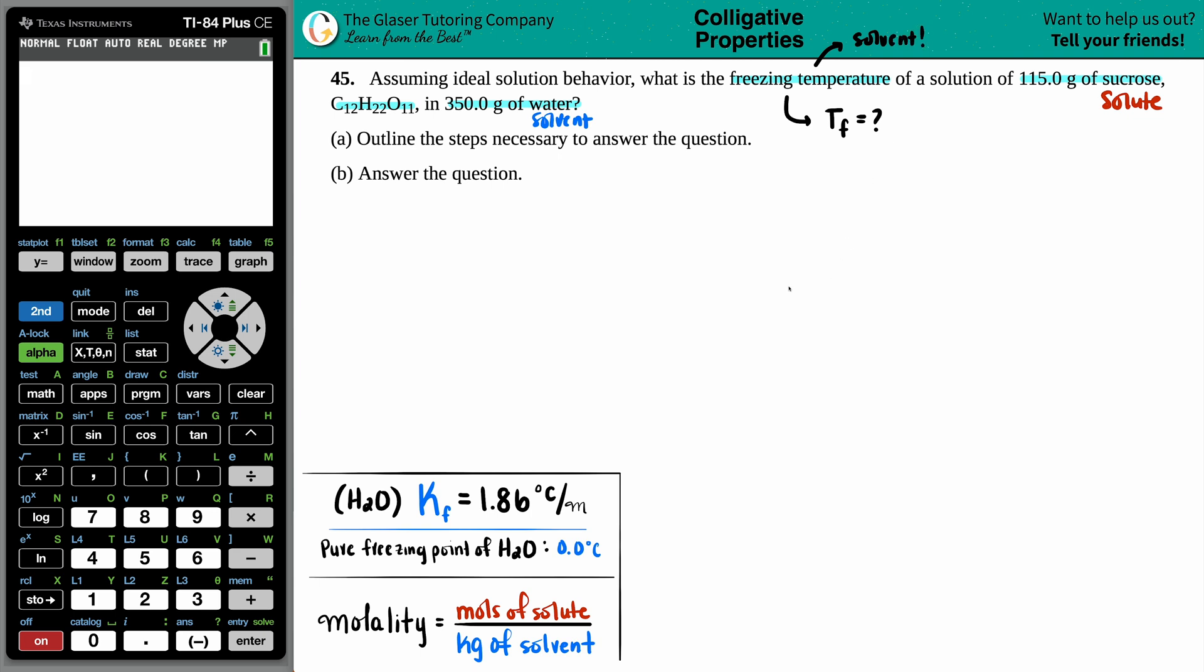Now the freezing temperature is going to highly rely on your solvent. Now the solvent here we stated was the water. So there's one freezing point and one boiling point that you guys should memorize, and that is of water. The pure freezing point of H2O is zero degrees Celsius. So at zero degrees, your liquid water will convert into a solid, aka ice. Just know that the pure boiling point for water is 100 degrees Celsius.